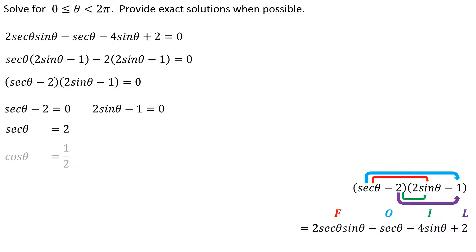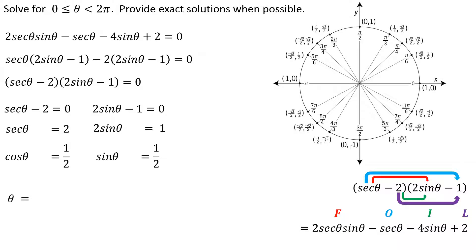Of course, if secθ equals 2, that means cosine of theta is 1/2, and then I also have to consider sine positive 1/2. So where am I? Well it looks like at π/6, sine has a value of 1/2. At π/3, cosine has a value of 1/2. At 5π/6, sine has a value of 1/2. And then finally at 5π/3, cosine has a value of positive 1/2.